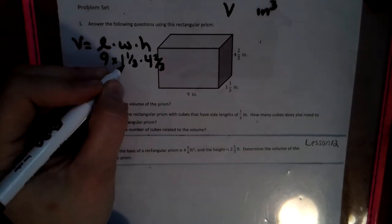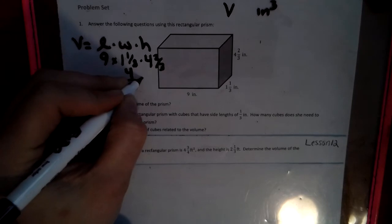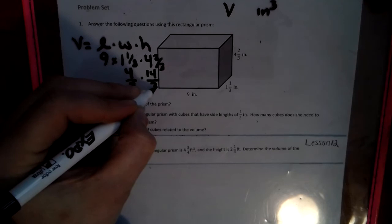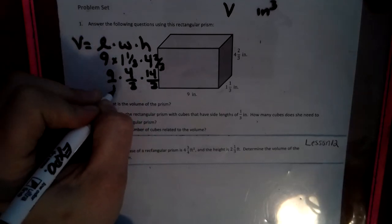So 3 times 1 is 3 plus 1 is 4, so this is four thirds. And this is 12, 13, 14 thirds. And then we have times 9, which is over 1. So a lot of you like to go straight across multiplication.